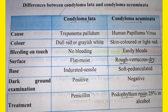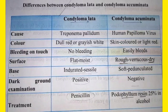Regarding color: condyloma lata is dull in color — grayish-white or dull red — because it is associated with syphilis. Condyloma accumulata, the cauliflower-like lesion, is skin-colored or light red in color.